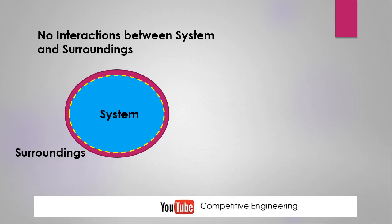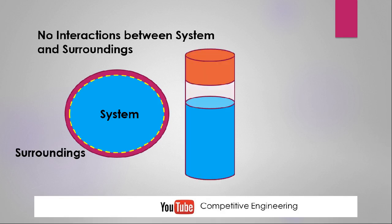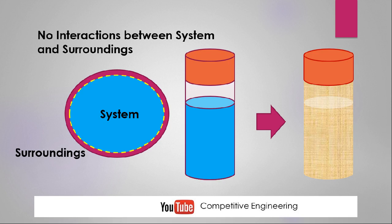Practical examples of an isolated system are very rare. Theoretically, the universe can be considered an isolated system. Another theoretical example is a well-insulated thermoflask, which contains a hot liquid insulated to arrest heat leakage. The mass inside remains constant since nothing is poured in or out, and the thick insulation arrests heat flow — so there is no mass transfer and no heat interaction between system and surroundings. Therefore, a thermoflask can be considered an isolated system.